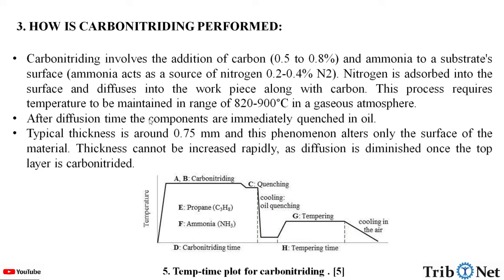This process requires temperature to be maintained in a range of 820 to 900 degrees Celsius in a gaseous atmosphere. After diffusion time, the components are immediately quenched in oil. Typical thickness is around 0.75 mm and this phenomenon alters only the surface of the material. Thickness cannot be increased rapidly as diffusion is diminished once the top layer is carbonitrided.